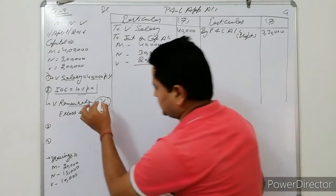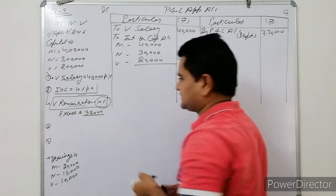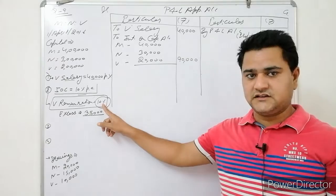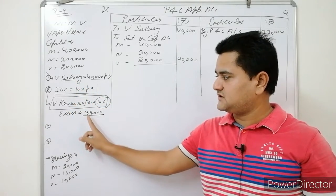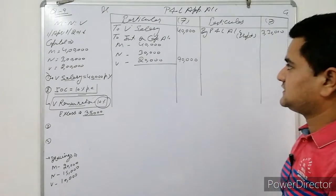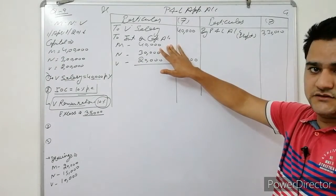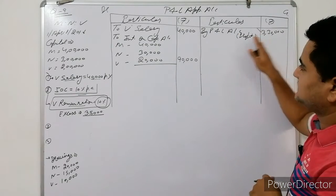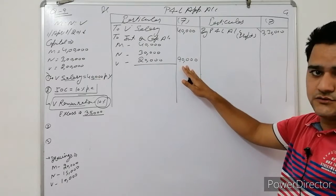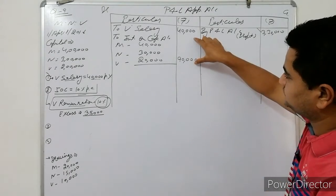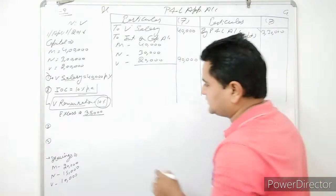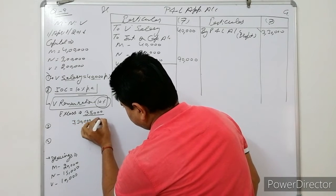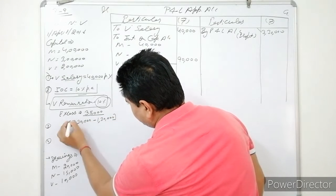Now the remuneration for Weibo. Remuneration is 10% on profit in excess of Rs.35,000 after deducting salary and interest on capital. Profit is Rs.3,30,000. If we subtract Rs.1,30,000 (salary + interest), the remaining profit is Rs.2,00,000.